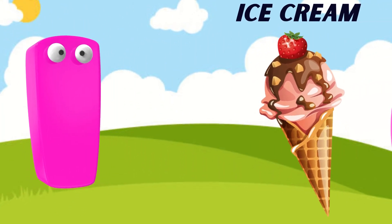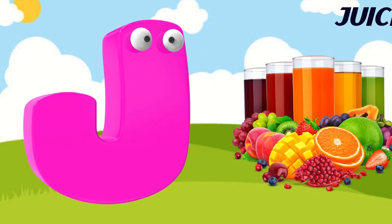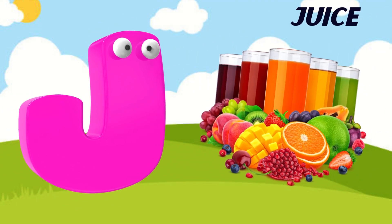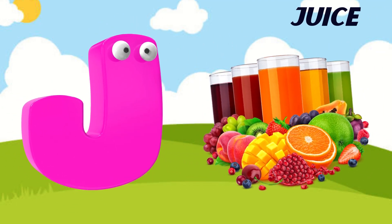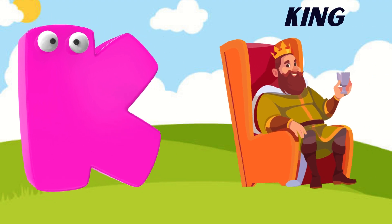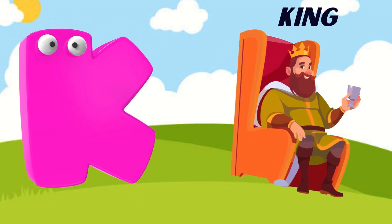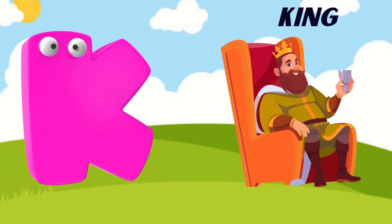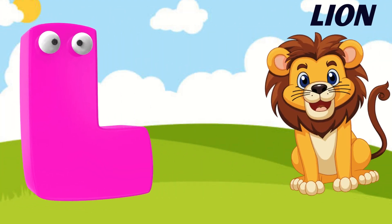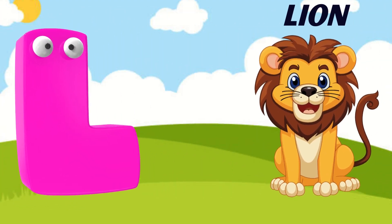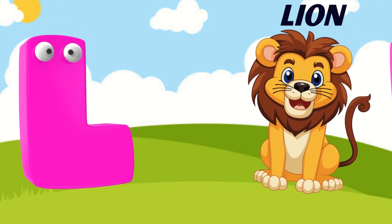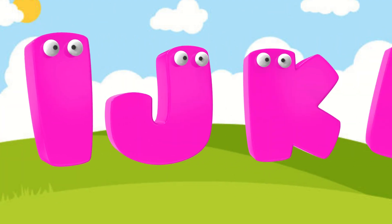I is for ice cream, i-i-ice cream. J is for juice, j-j-juice. K is for king, k-k-king. L is for lion, l-l-lion.